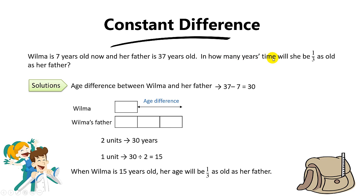But the question asked for the number of years time. And how old is Wilma now? Wilma is 7 years old now. So since Wilma is 7 years old now, to find the number of years later, you need to take 15 minus away 7. And the answer is 8 years time.